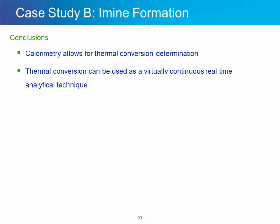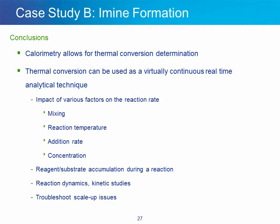These results excluded mixing as the cause for rate limitation and pointed to temperature. The heat of reaction, almost 4 kJ, was also obtained during this experiment. In conclusion for this second case study, calorimetry allows to obtain thermal conversion as the most continuous and real-time analytical technique. It allows, for instance, to study the impact of mixing or reaction temperature on reaction rate and kinetic profile. You can extend this to a variety of parameters relevant for process development, like addition rates or concentration. For more advanced process development, reagent accumulation during a reaction becomes a critical parameter, as well as reaction dynamics and kinetic profile — all useful for process troubleshooting during scale-up studies.